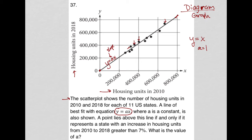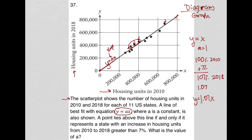In order to be above the line, it's saying that you have to have a greater than 7% increase. What's a 7% increase? That's 100% of the housing units in 2010 plus an additional 7%, so that leads us to 107% for 2018. As a decimal, that would be 1.07. So if these points have to be above the line to represent a greater than 7% increase in housing units, the question is saying that this line is y equals 1.07x. The slope is 1.07. If you're above that line, it means there was a greater than 7% increase. If you're on it, exactly 7%. If you're lower, then less than 7%.